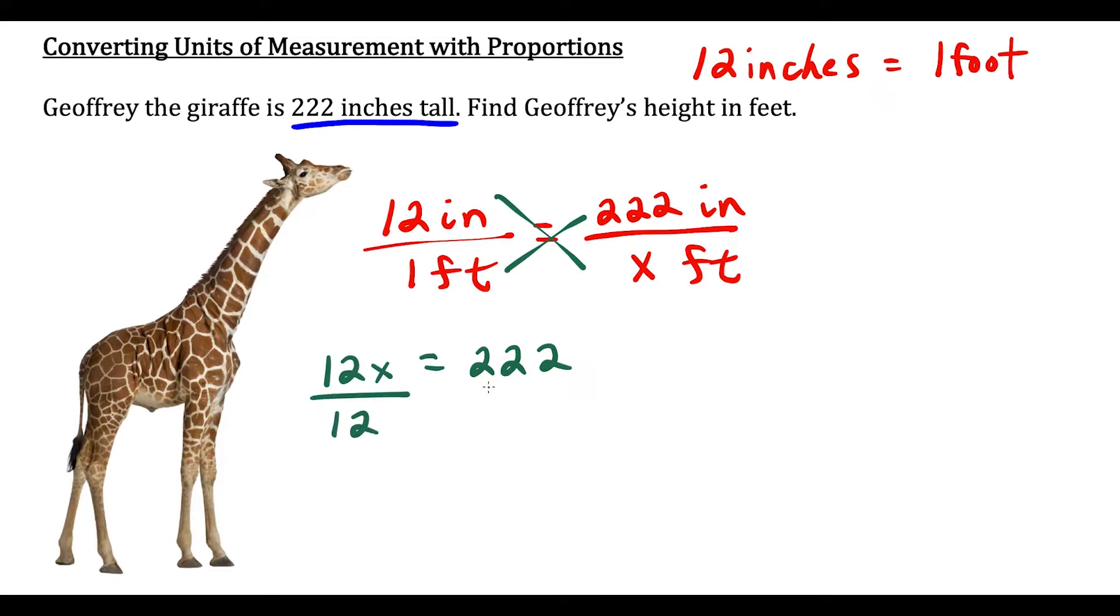Now to solve for x we're dividing both sides by 12. And for this next part let's assume we don't have a calculator. We'll practice long division. So we have 222 and we're dividing by 12.